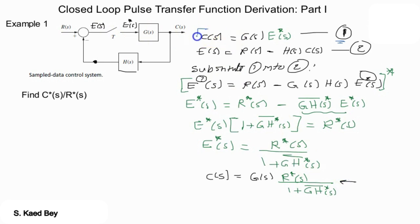So if we star equation one to find the sampled output C star of s we get C star of s equals to G star of s E star of s. If we put the value of G star of s back that will lead to the sampled output.